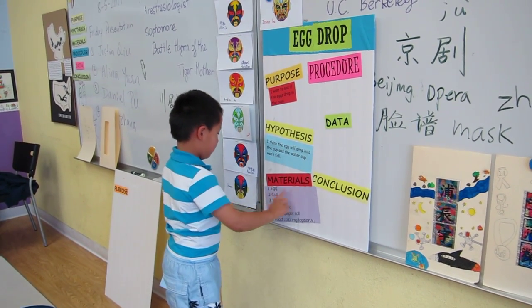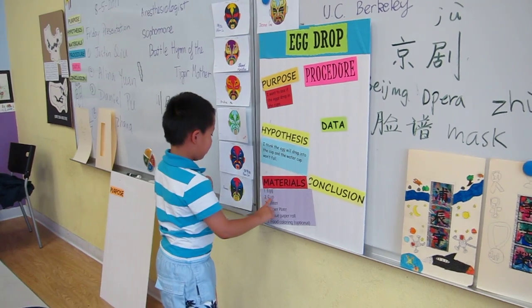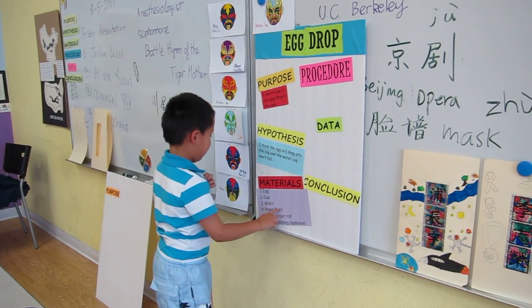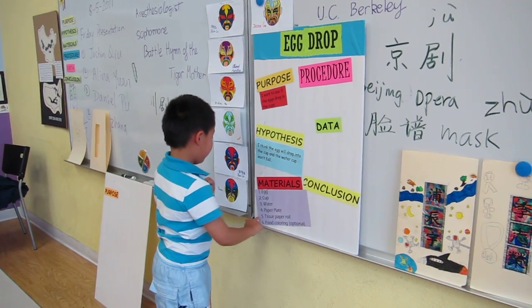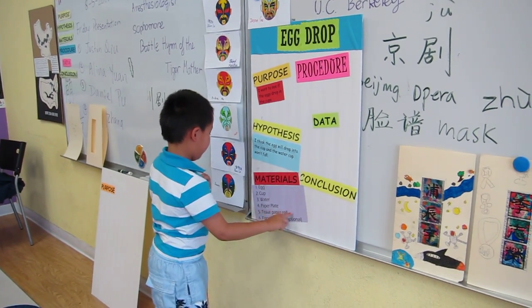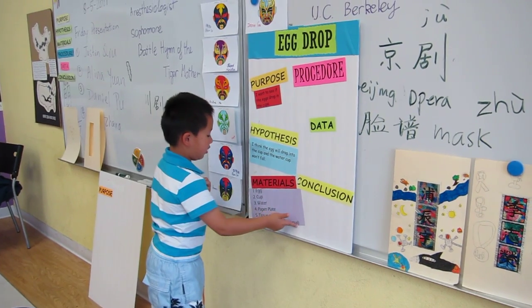Materials: 1. Egg. 2. Cup. 3. Water. 4. Paper plate. 5. Paper roll. 6. Food coloring, optional.